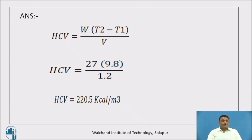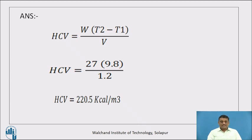The formula for HCV in the Boys calorimeter is: HCV = W × (T₂ − T₁) ÷ V. W is the mass of water used for cooling = 27 kg; T₂ is the outlet water temperature and T₁ is the inlet water temperature, with a rise of 9.8°C; V is the volume of gas burned = 1.2 m³. Substituting all values, the answer for HCV is 220.5 kcal/m³.